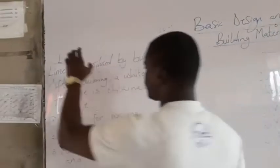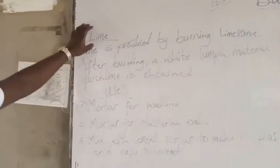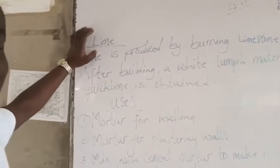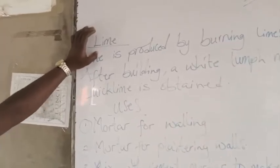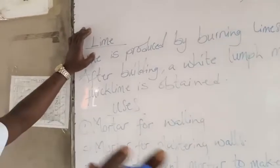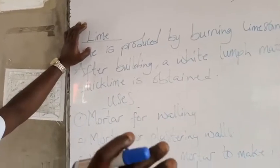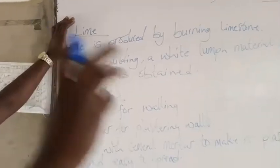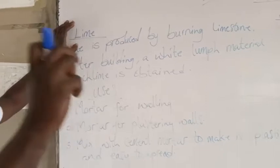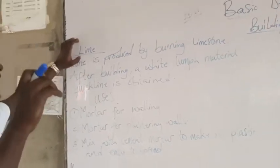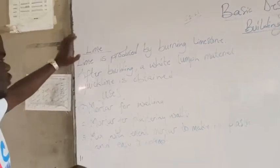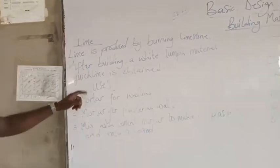Now lime is also a binding material just like the cement and the clay. I told you we have three types of binding materials. We have the clay, the cement, and the lime.